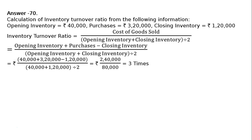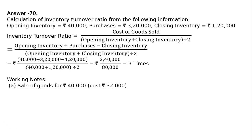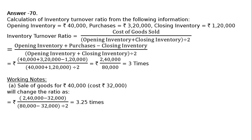The basic inventory turnover ratio is 3 times. For Part A, sale of goods costing rupees 32,000: the cost of goods sold of 2,40,000 increases by 32,000 as goods go out, and the closing inventory also reduces by 32,000. The new ratio becomes (2,40,000 + 32,000 − 32,000) divided by (80,000 − 16,000) — wait, recalculating: numerator stays 2,40,000 and denominator reduces, giving 3.25 times.